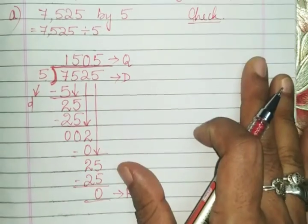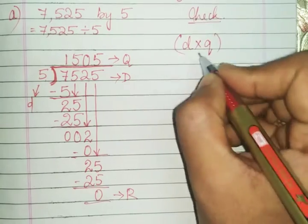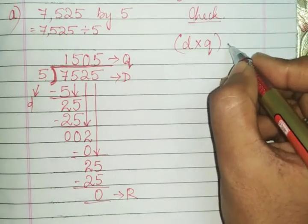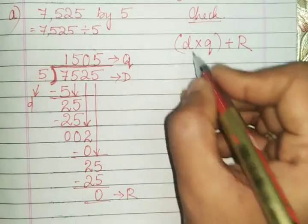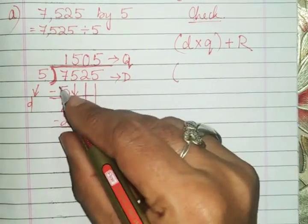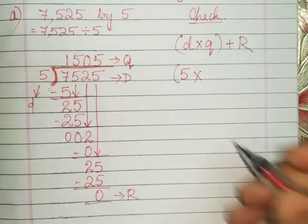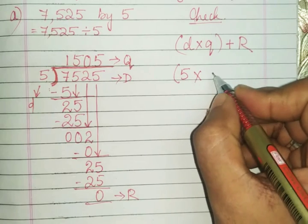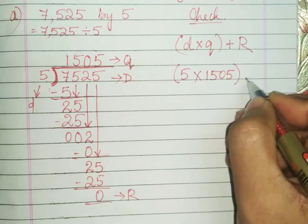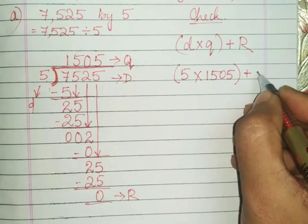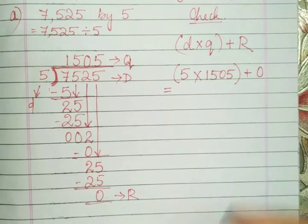Now to check this, you have to go for the formula. That is (d×q)+R=D—capital Q or small q doesn't matter, add R. Remember, what is small d here? That is 5 into q. Q is 1505.